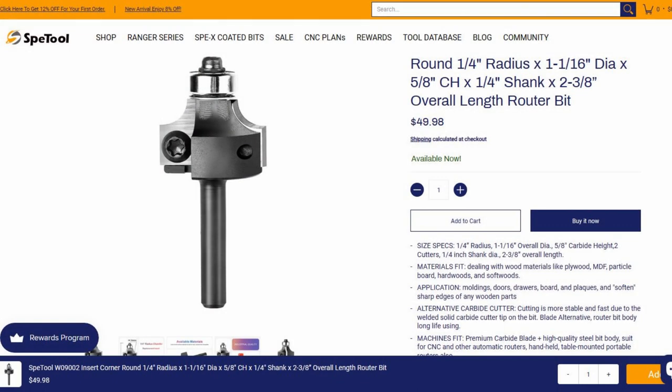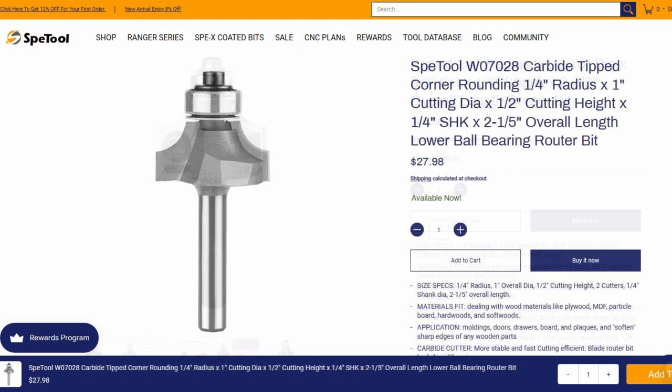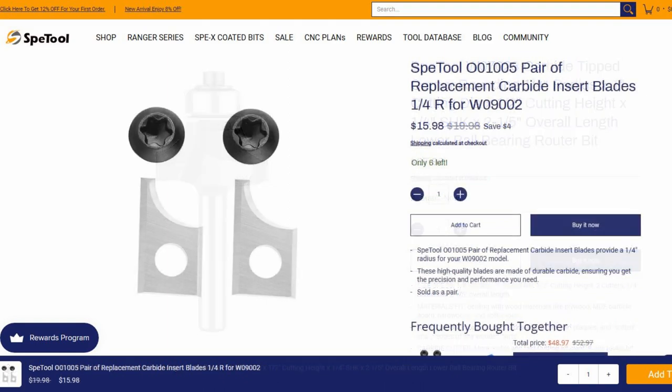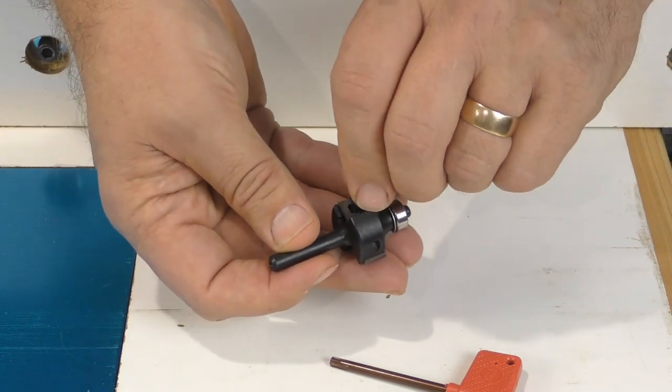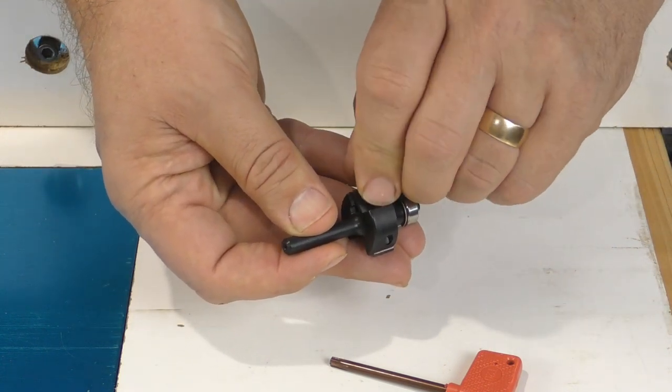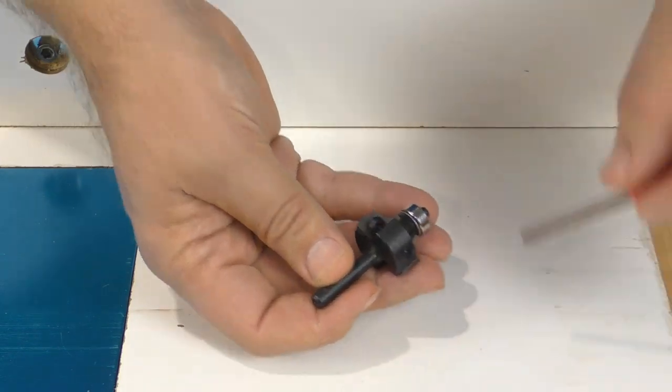The real question is: why buy an insert bit when it's almost twice the price of a standard bit? The answer is usage. It's much less expensive to replace the inserts than to buy a whole new bit, so when it's a bit you use all the time, like a quarter inch round over, the upfront cost is an investment that pays off every time you replace the inserts.